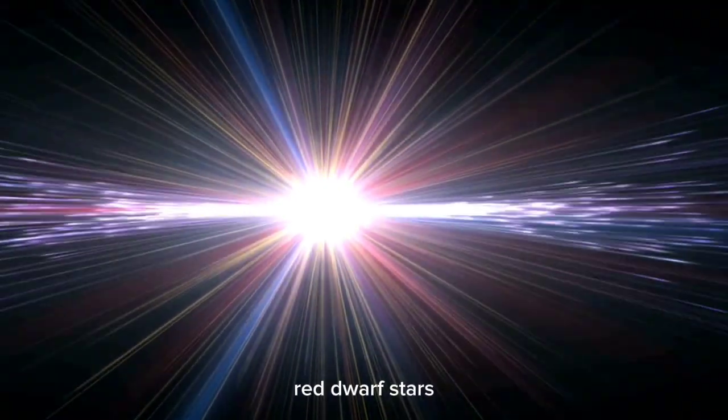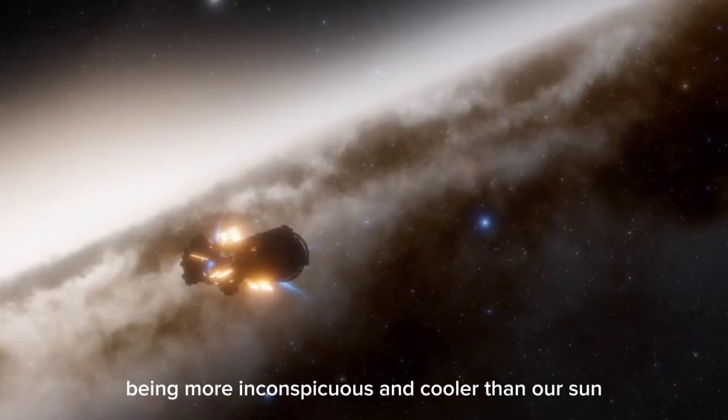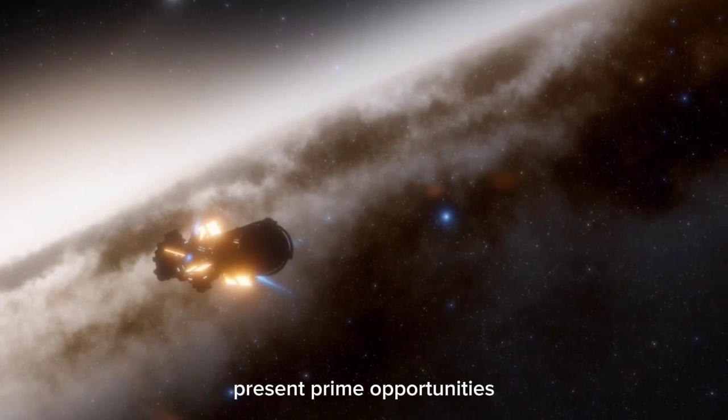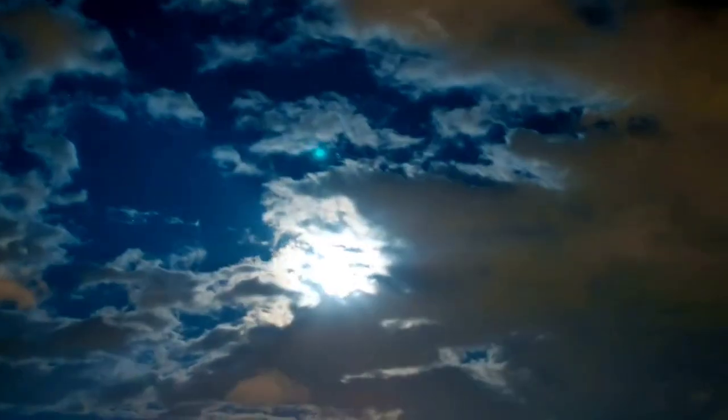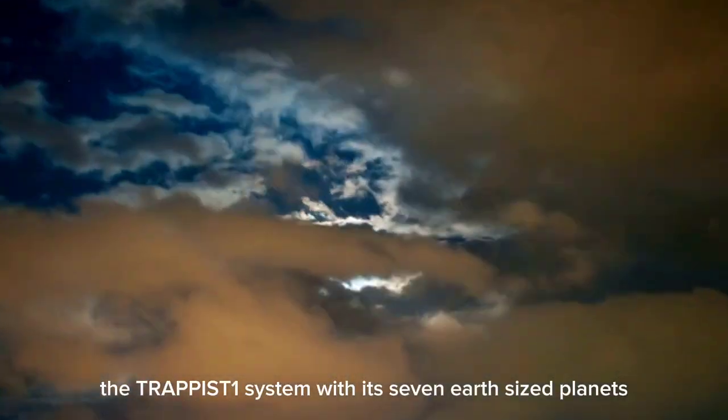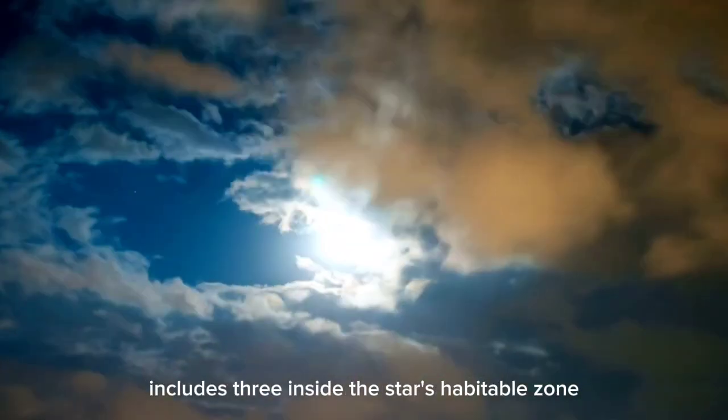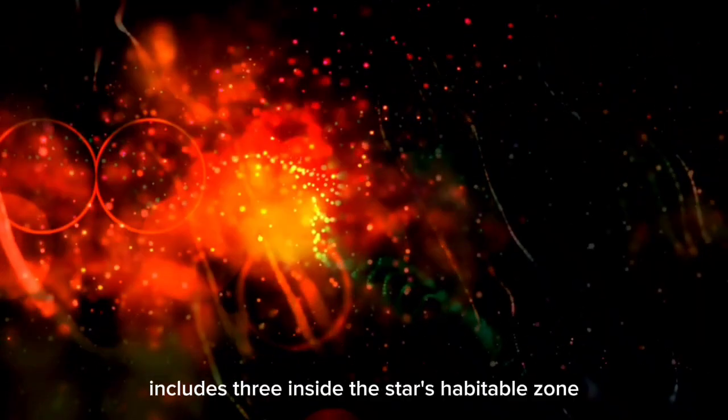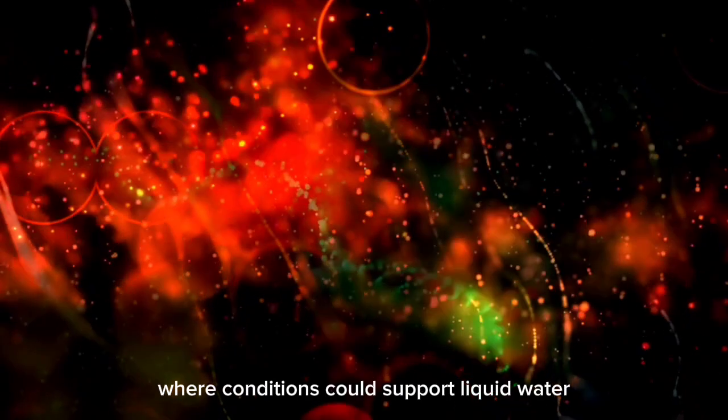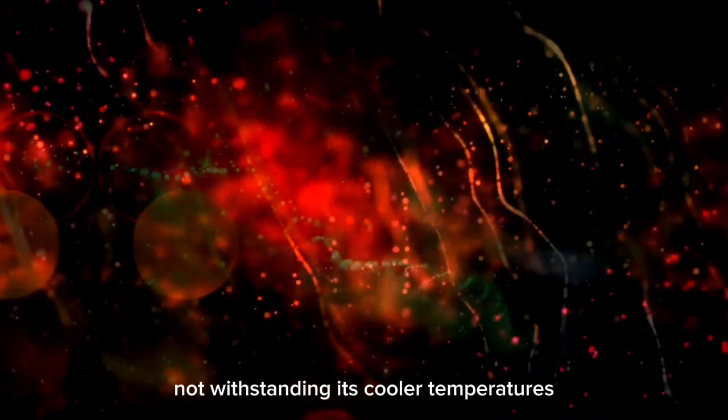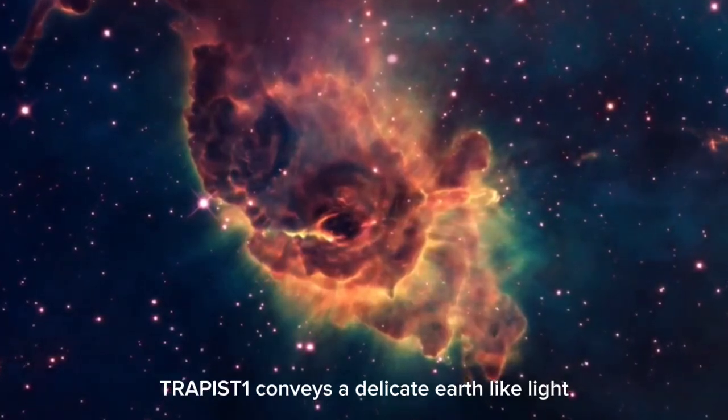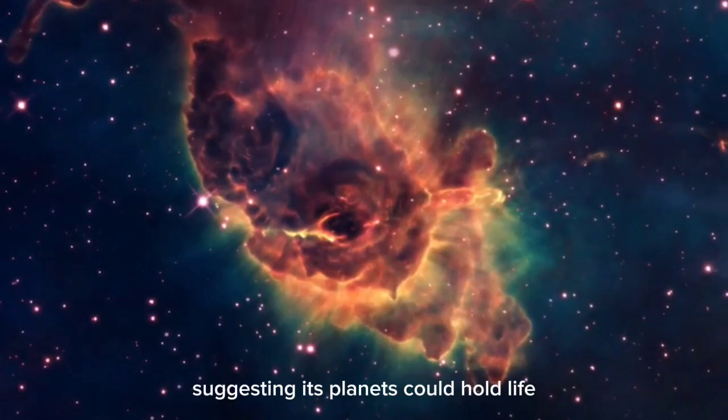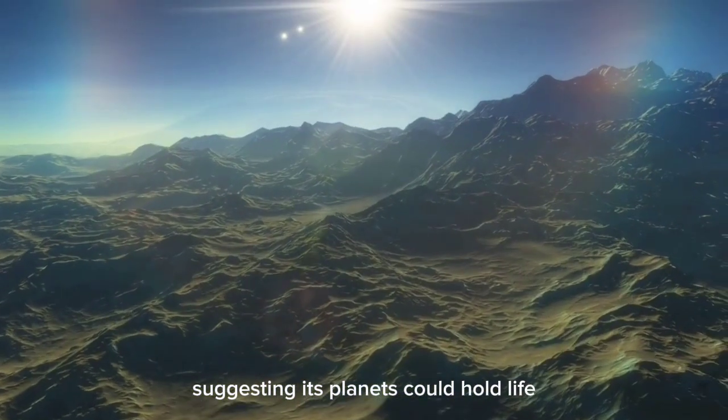The discovery of more than 4,000 exoplanets circling far-off stars shows the surprising movement in our mission to understand the universe. Red dwarf stars, being more inconspicuous and cooler than our sun, present prime opportunities for considering potential habitability for life. The TRAPPIST-1 system, with its seven Earth-sized planets, includes three inside the star's habitable zone, where conditions could support liquid water. Notwithstanding its cooler temperatures, TRAPPIST-1 conveys a delicate, Earth-like light, suggesting its planets could hold life.